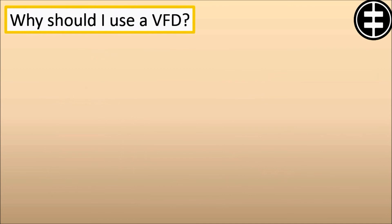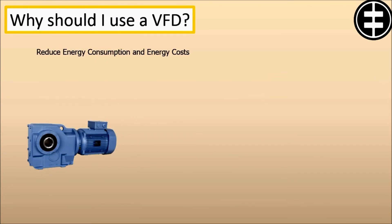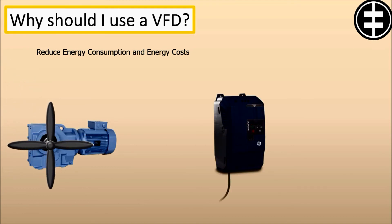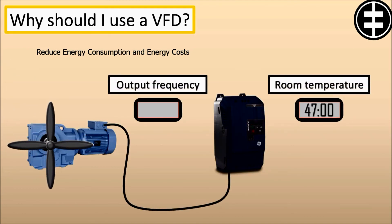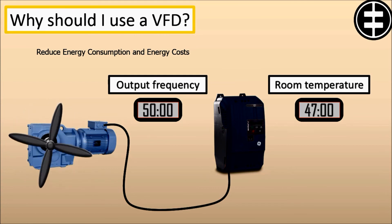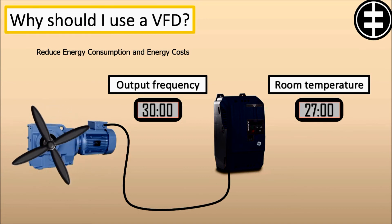Why should I use a VFD? Reduce energy consumption and energy costs. If you have an application that does not need to be run at full speed, then you can cut down energy costs by controlling the motor with a variable frequency drive, which is one of the benefits of variable frequency drives. VFDs allow you to match the speed of the motor driven equipment to the load requirement. There is no other method of AC electric motor control that allows you to accomplish this. Electric motor systems are responsible for more than 65% of the power consumption in industry today. Optimizing motor control systems by installing or upgrading to VFDs can reduce energy consumption in your facility by as much as 70%.